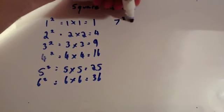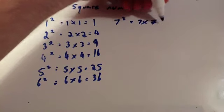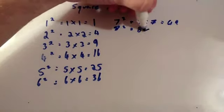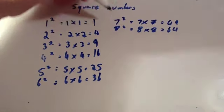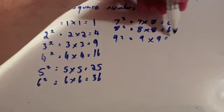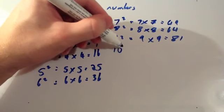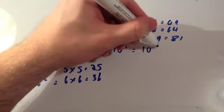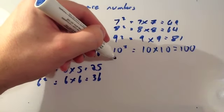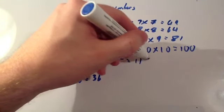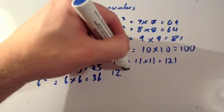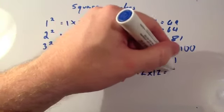7 squared — 7 times 7 — equals 49. 8 squared — 8 times 8 — is 64. 9 squared — 9 times 9 — equals 81. And finally, 10 squared — 10 times 10 — equals 100. It's also useful to know the next two: 11 squared equals 11 times 11, which equals 121. And 12 squared is 12 times 12, which equals 144.